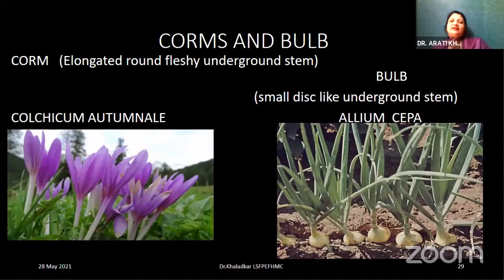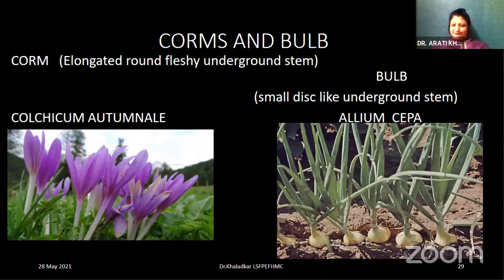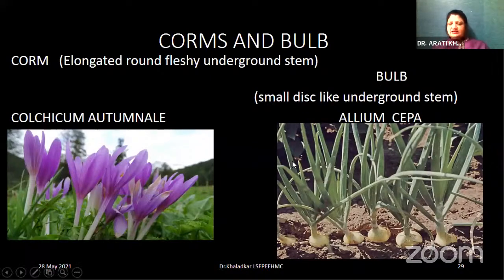Next, we have the corms and bulbs. Please do not misunderstand corn and corm. A corm is an elongated, round, fleshy, underground stem. The best example for the corm is Colchicum autumnale. I'm giving you unique examples so that you can remember them for your viva as well as examinations, where you may be asked full questions, short answer questions, or short notes. You need to be very specific in writing down your answer. Then we have the bulb — Allium cepa — a small disc-like underground structure.